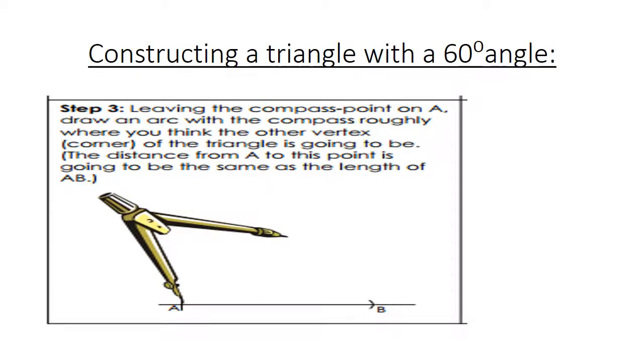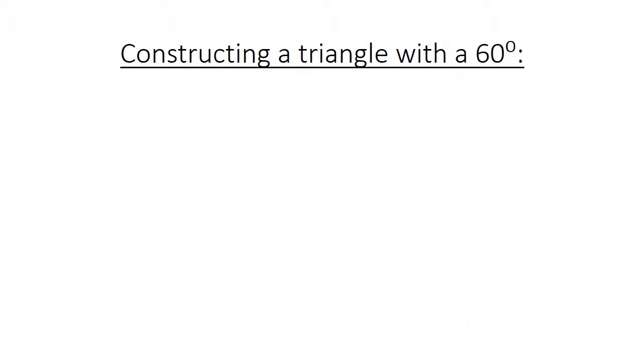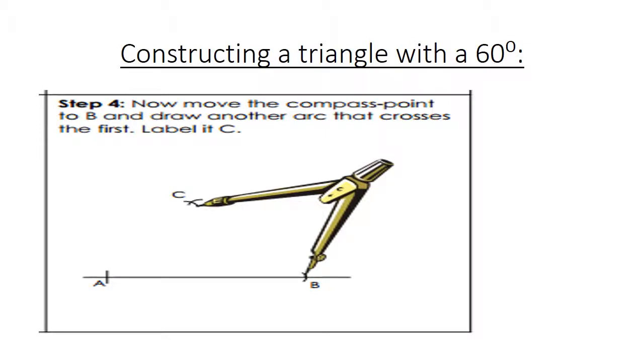Leaning the compass point on A, draw an arc with the compass roughly where you think the other vertex, the corner of the triangle is going to be. The distance from A to this point is going to be the same as the length of AB. Now we move the compass point to B. We draw another arc that crosses the first one. Label it C.